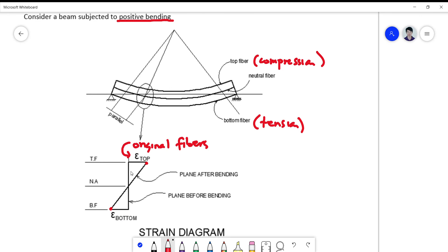So this compatibility assumption states that this plane, or this line here which is originally plane, will still remain plane after bending. So this shows now what compatibility is all about.